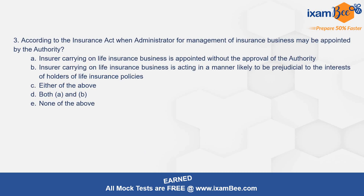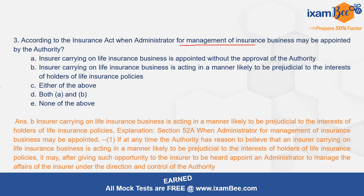Question number 3: according to the Insurance Act, when may an administrator for management of insurance business be appointed by the authority? The correct option is B — where the insurer carrying on life insurance business is acting in a manner which is likely to be prejudicial to the interests of the policy holders of life insurance policies. Section 52 is the related provision which mentions when an administrator for management of insurance business may be appointed.